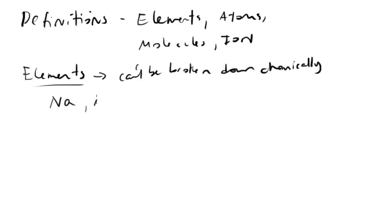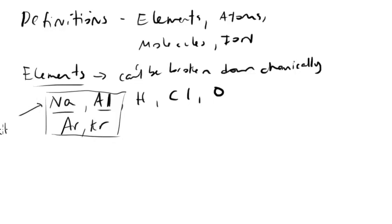So examples would be sodium, aluminum, hydrogen, chlorine, oxygen, and so on. Now the one thing to mention is that some elements in their free-standing state are like this. So another example would be argon or krypton. These guys are by themselves. They float around as atoms.